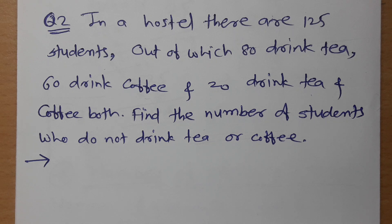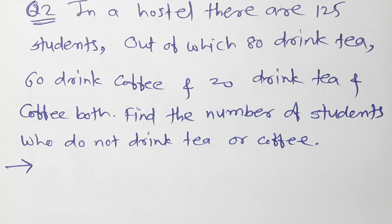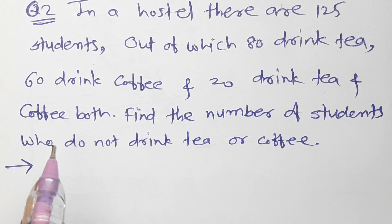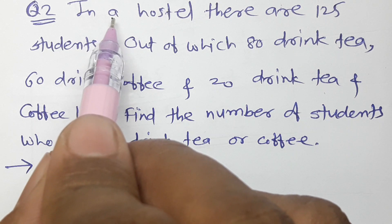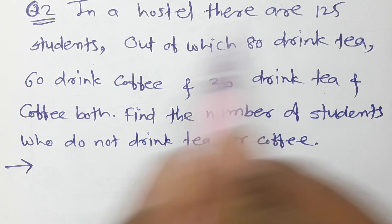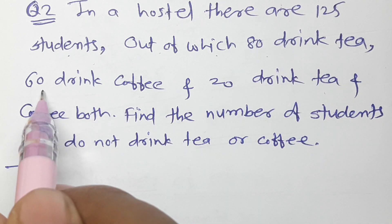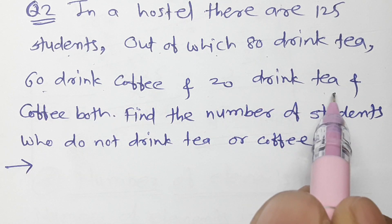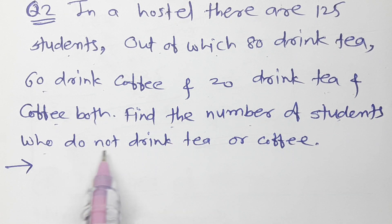Namaskar dosto. Class 9th Maharashtra State Board Mathematics, Part 1 Algebra, Chapter number 1 Sets, Practice Set 1.4, Question number 2. In a hostel there are 125 students, out of which 80 drink tea, 60 drink coffee, and 20 drink both tea and coffee. Find the number of students who do not drink tea or coffee.